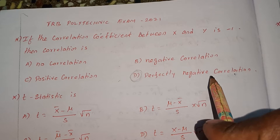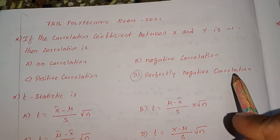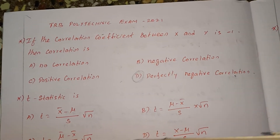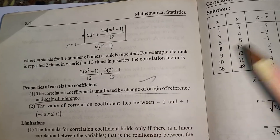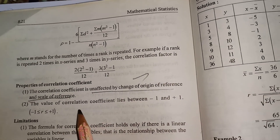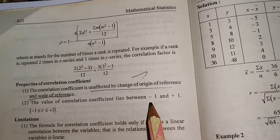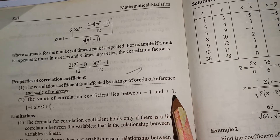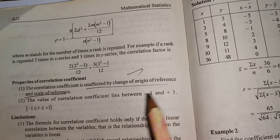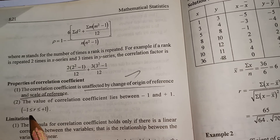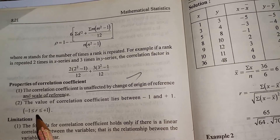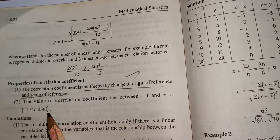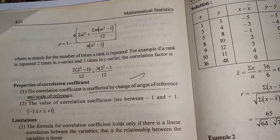The perfectly negative correlation is the correct answer because the value of the correlation coefficient lies between minus 1 and plus 1, that is: minus 1 less than or equal to r, less than or equal to plus 1.